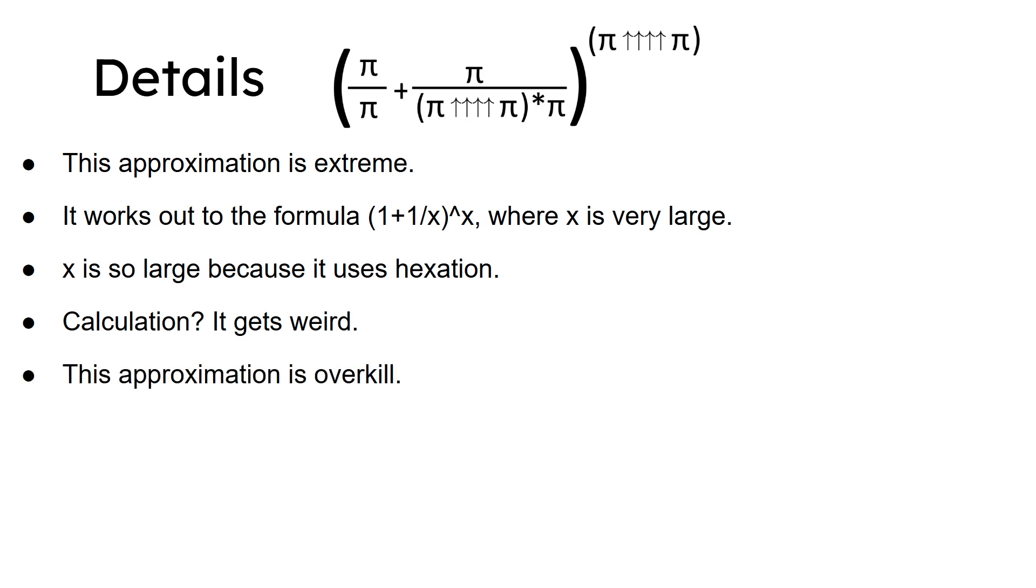In fact, anyways, it's supposed to result in a crazy number because pi is greater than 3 and 3 hexade to 3 is already insane.